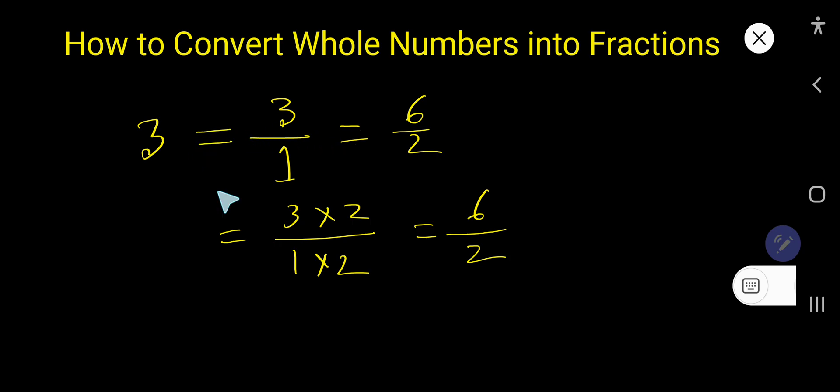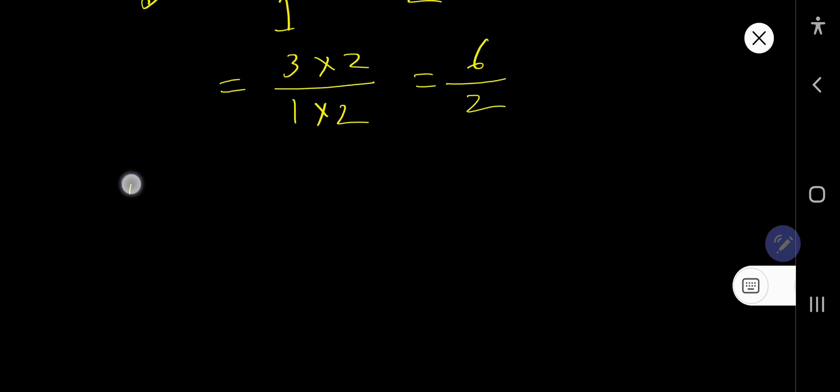Let us take another example. How to express this whole number five as a fraction? It is easy, just you have to take one as a denominator. Now, if you multiply both parts by three, then what will happen? You will get 15 over 3. So look: 5 equals 5 over 1 or 15 over 3—the same thing. This is the way to convert a whole number to a fraction.